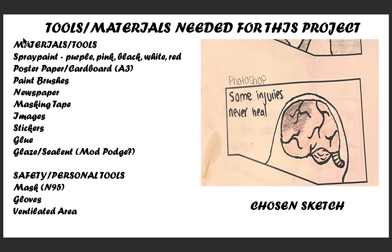I then looked at tools and materials I could need for creating this product on a piece of poster board or in real life. These included spray paint in the colors pink, black, white, red, and the domestic violence representative color of purple, as well as poster paper or cardboard, paint brushes, newspaper, masking tape, images, stickers, glue, and a sealant such as Mod Podge. For safety, I would use a ventilated area due to the spray paint, gloves, and a mask to avoid breathing in paint fumes.